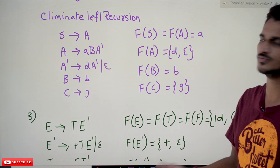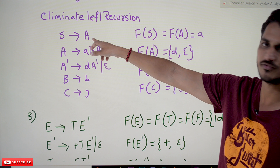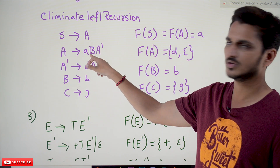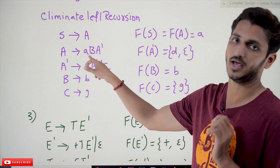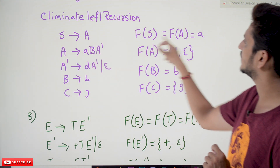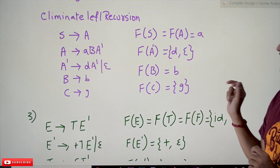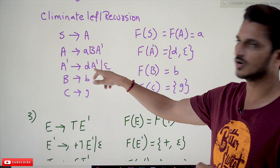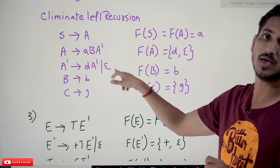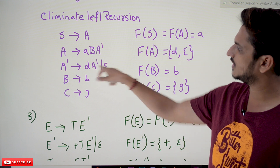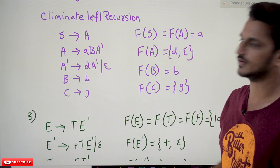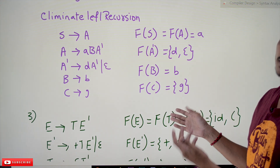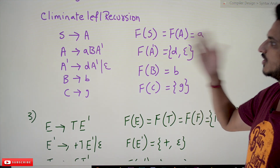Now coming to the FIRST symbols: FIRST(S) = FIRST(A). FIRST(A) — the first terminal symbol is 'a', so FIRST(S) = FIRST(A) = {a}. FIRST(A') = {D, epsilon}, since you can take D or epsilon. FIRST(B) = {b}. FIRST(C) = {G}. The key point here is that you must eliminate left recursion before computing FIRST sets.